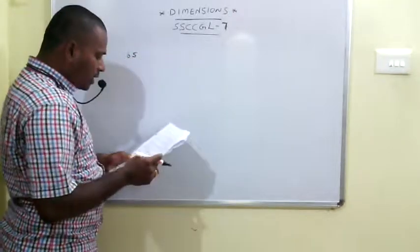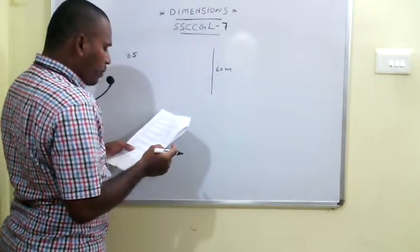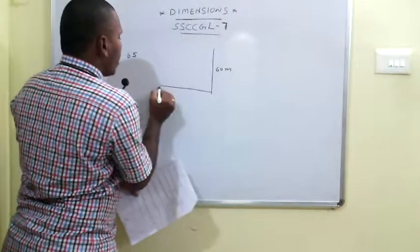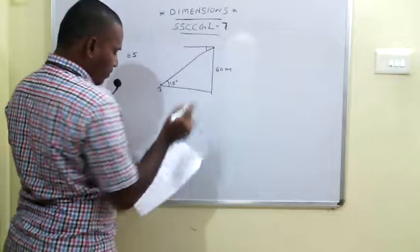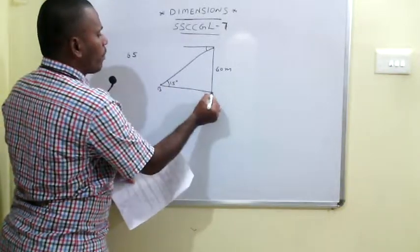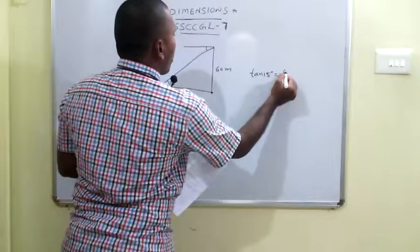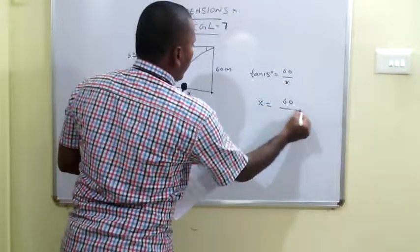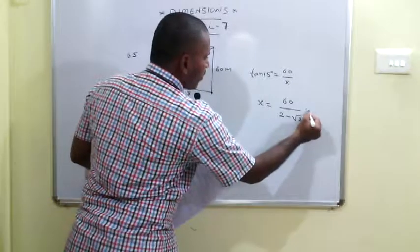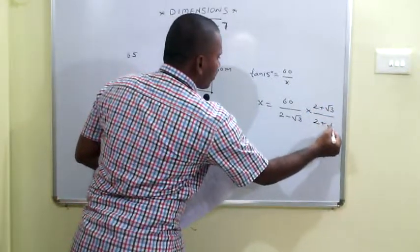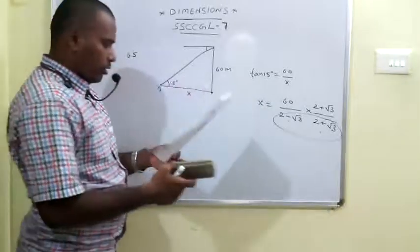The 65th problem: From the top of a lighthouse 60 meters high with its base on sea level, the angle of depression of a boat is 15 degrees. We need to calculate the distance of the boat from the foot of the lighthouse. Applying tan 15° = opposite/adjacent: x = 60 / tan 15°. Since tan 15° = 2 - √3, rationalizing gives x = 60(2 + √3) meters.